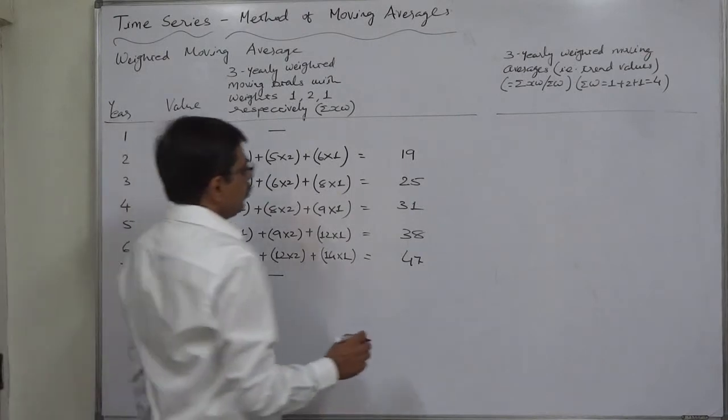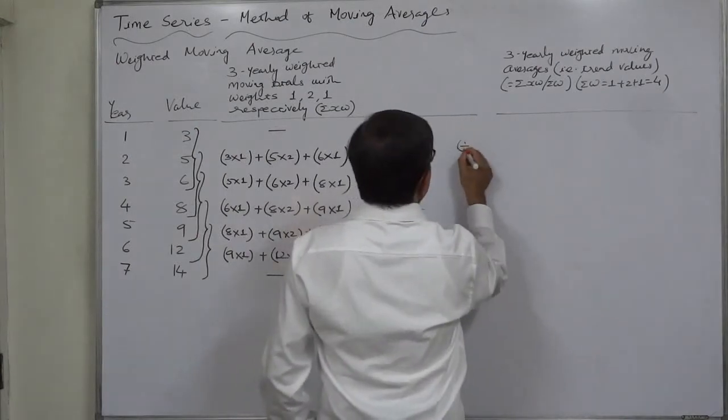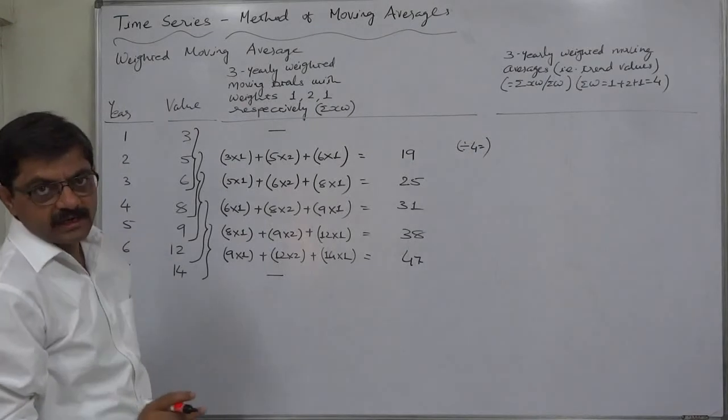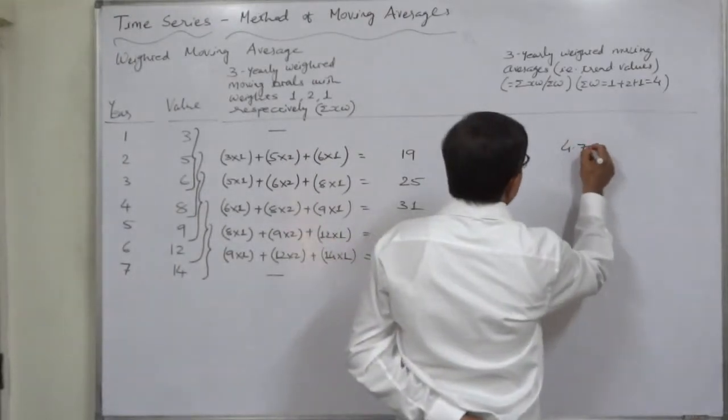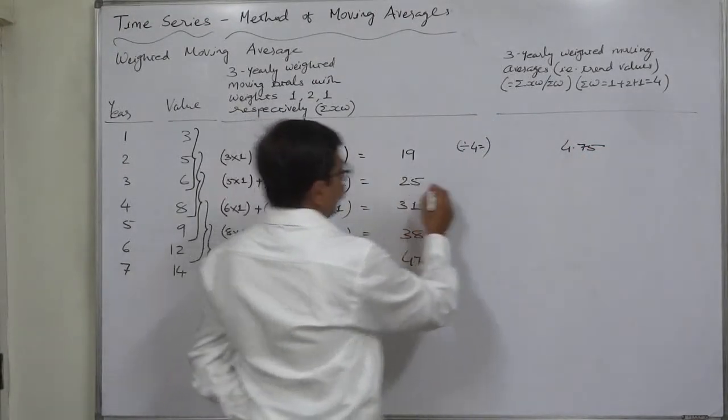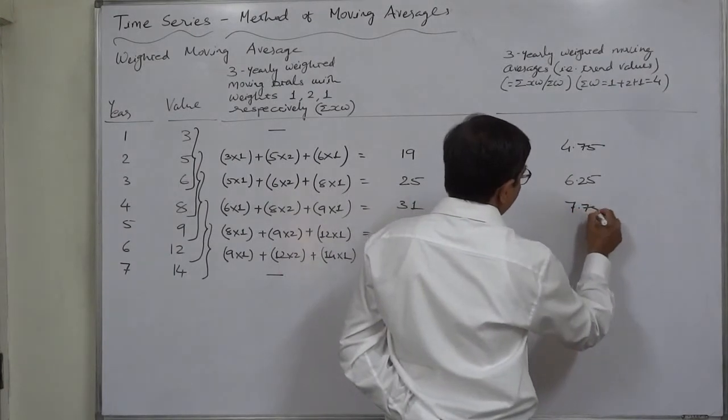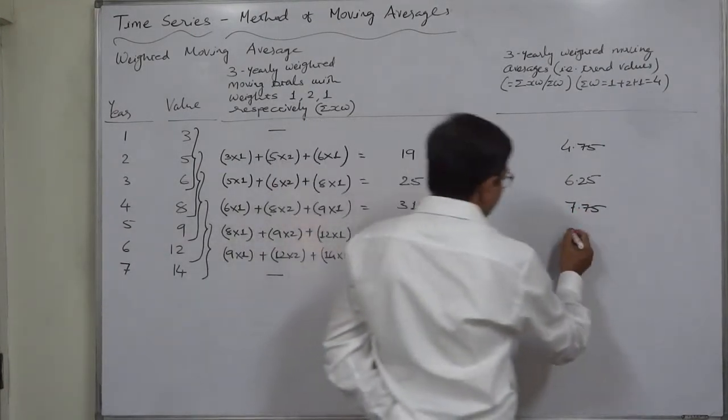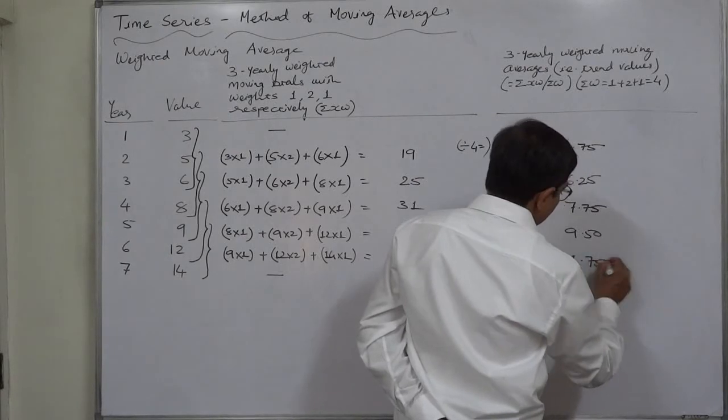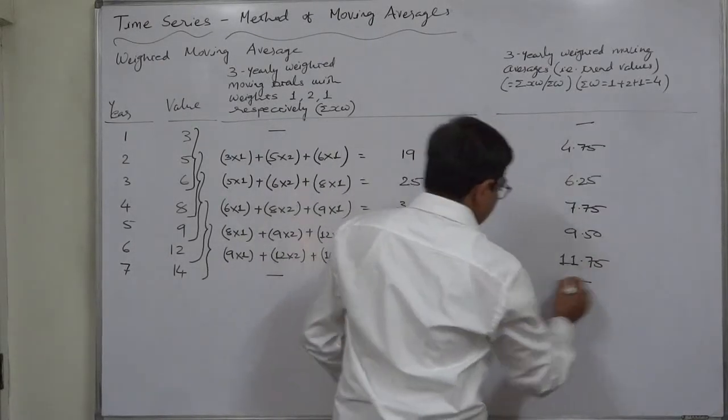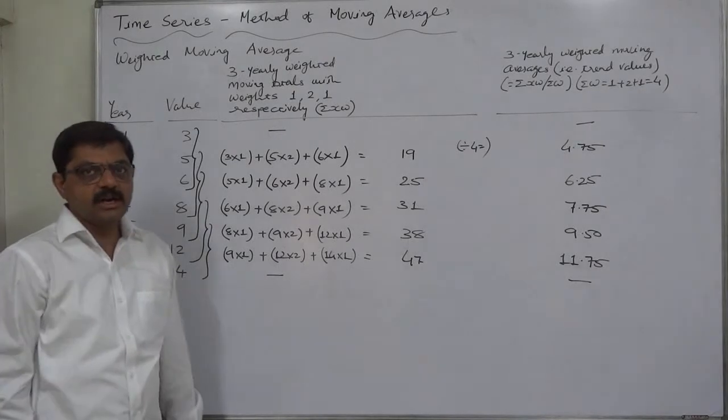Now sigma x divided by sigma w, which is 4. 19 divided by 4: 19 divided by 2 is 9.5, divided by 2 again is 4.75. 25 divided by 4 is 6.25. 31 divided by 4 is 7.75. 38 divided by 4 is 9.5, and 47 divided by 4 is 11.75.